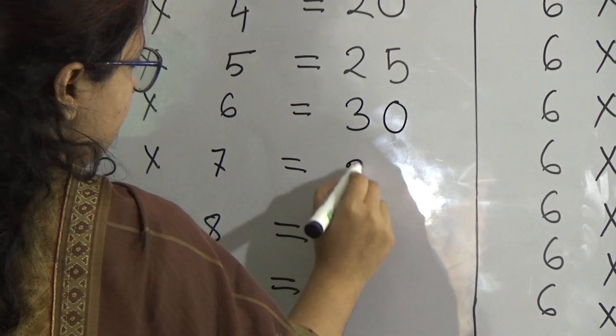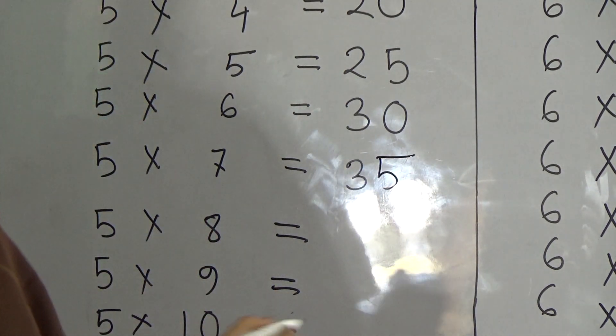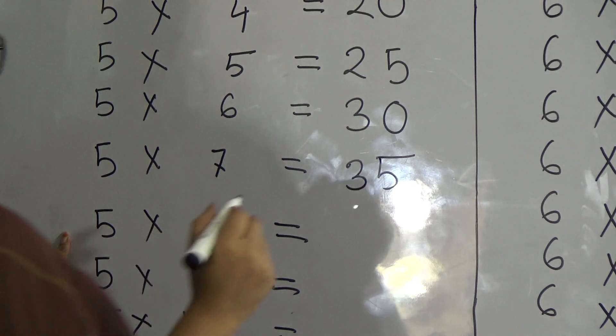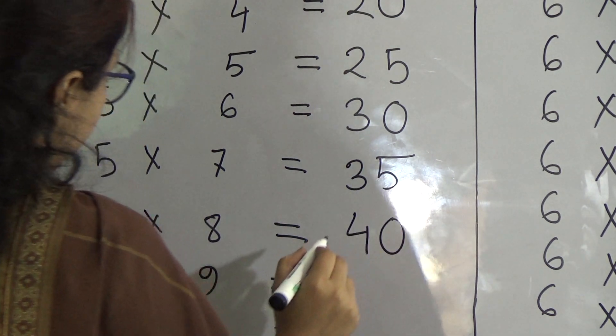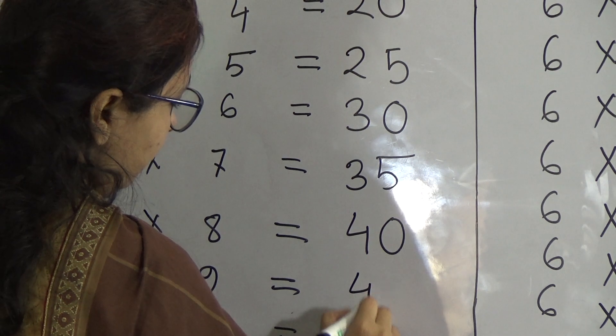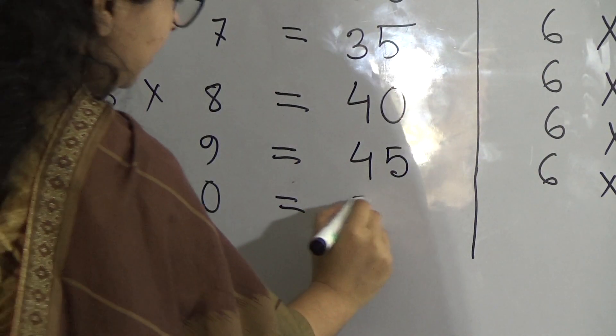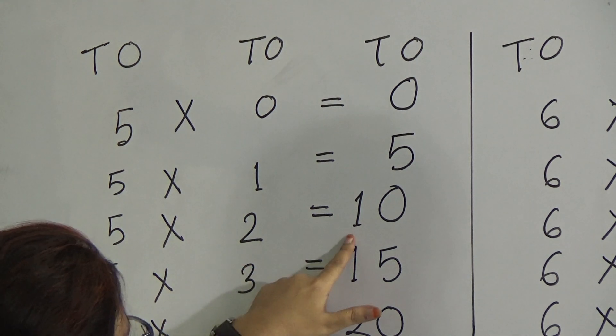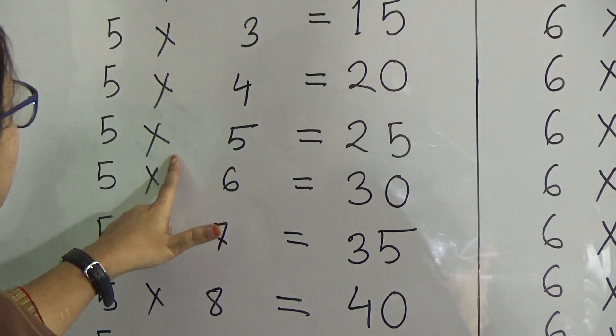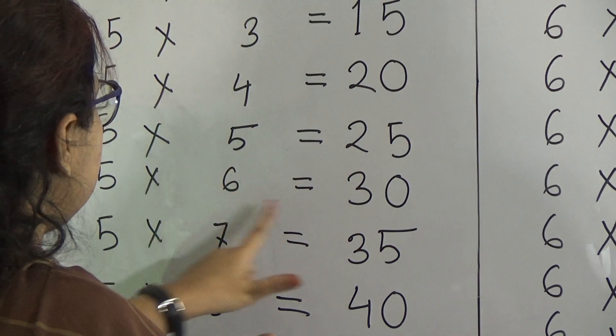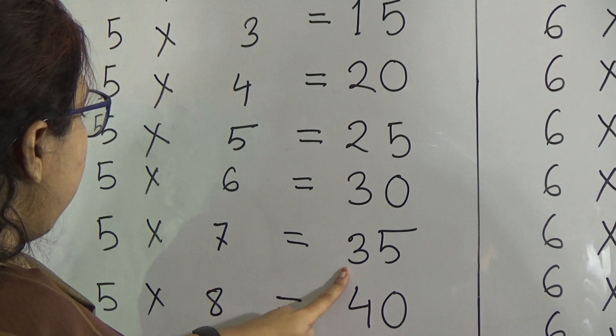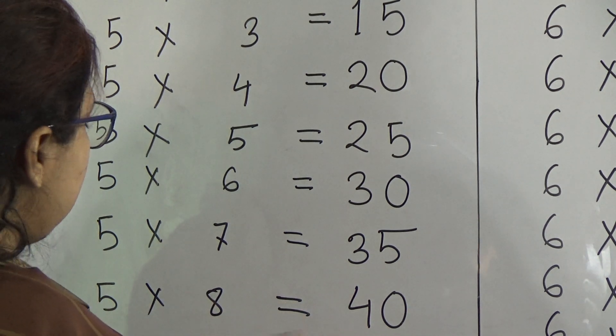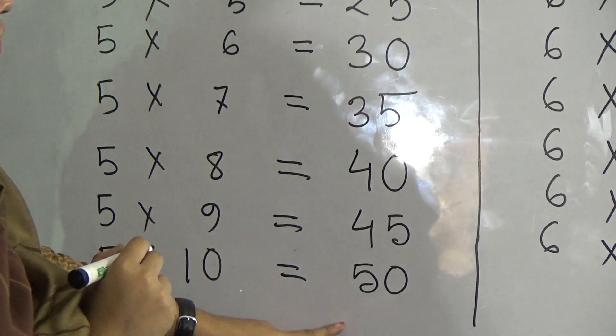5 times 7 is 35. 5 times 8 is 40. 5 times 9 is 45. 5 times 10 is 50.